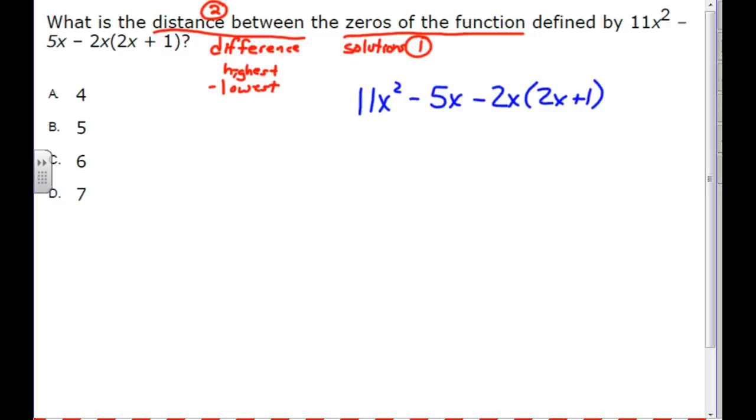And the first step in cleaning this thing up is noticing that you have parentheses and you have something outside of the parentheses. That means you need to do the distributive property on just that part. So the 11x² is not affected by what we're getting ready to do, nor is the minus 5x. But this minus 2x has to be distributed and multiplied by that 2x and by that positive 1.